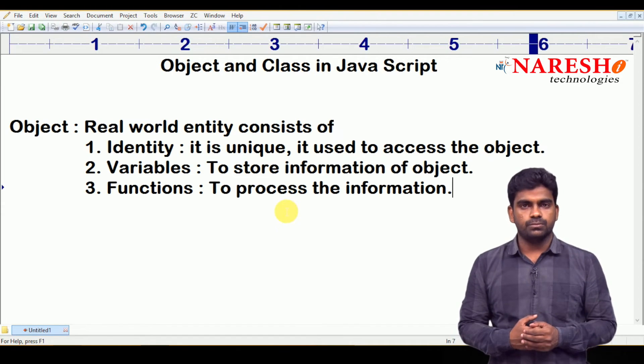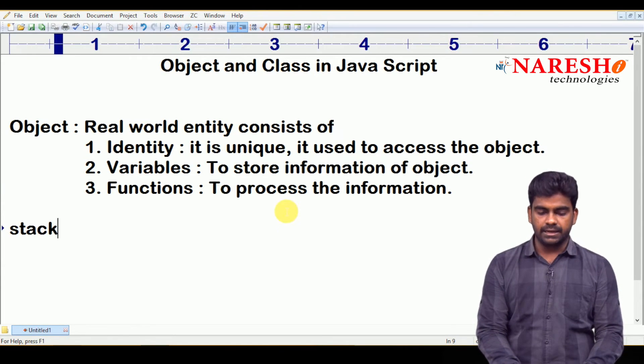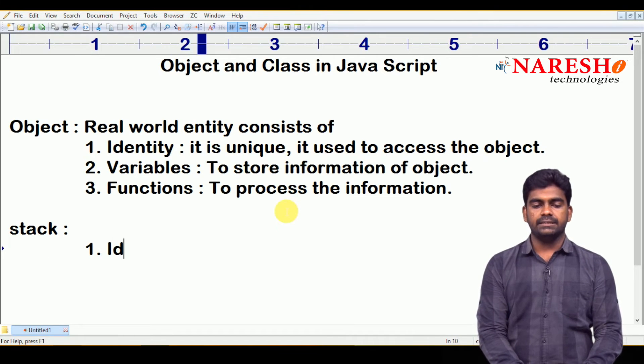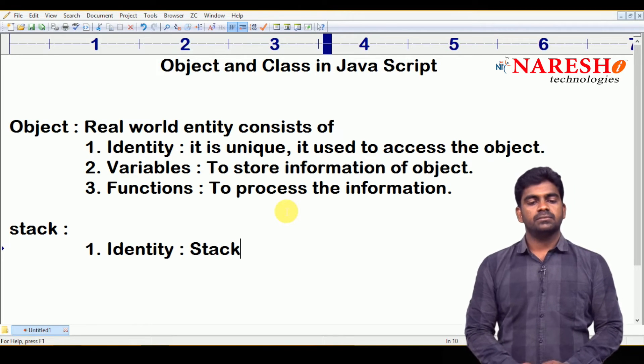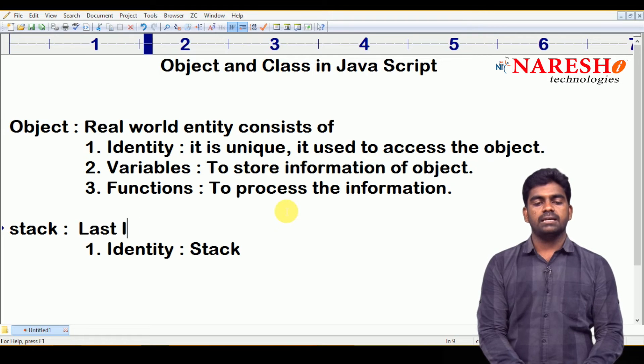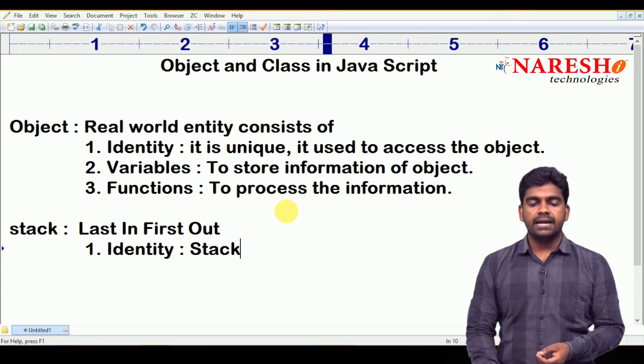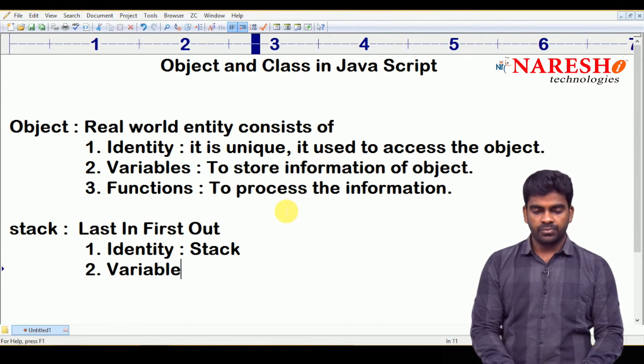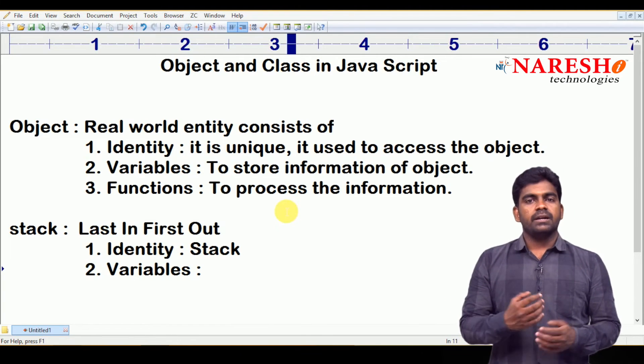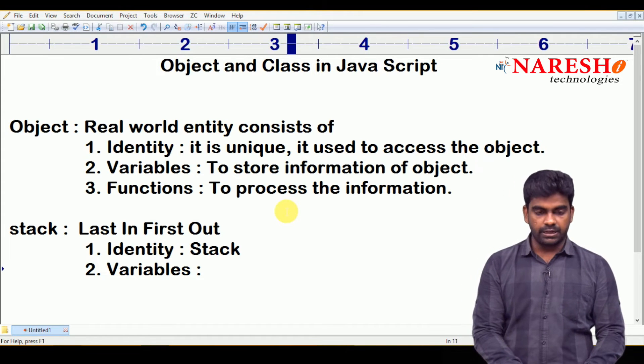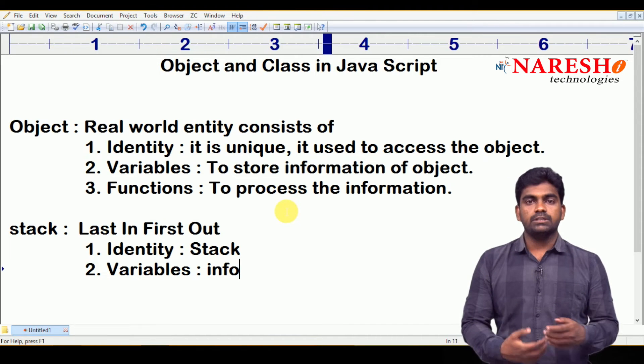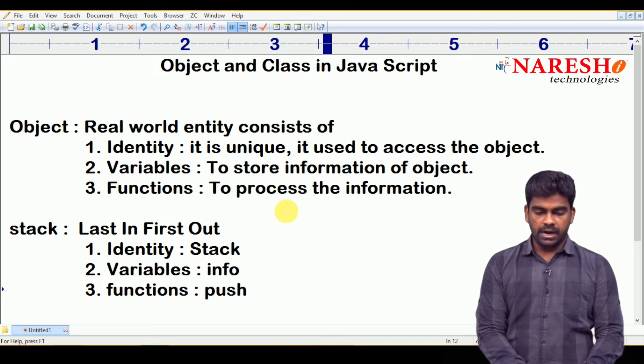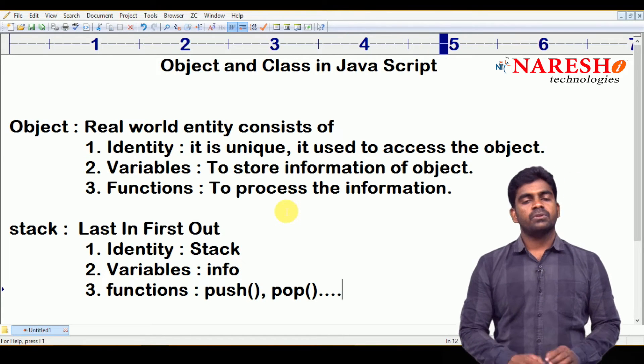In our data structures also, if you take one object called a stack, it is like a data structure. It has an identity, and of course we can give any identity like stack only. And simply here it is an object. We can say that it follows the rule called last in first out. Identity is called stack. With the help of stack object only, we can access the complete functionality. And second one is a set of variables. What are the variables we are using to perform the operations? That comes under information inside that stack, which is nothing but variables. We are storing the data. And next, how to process the data? Through functions only we can process the data. Functions like if you want to push element, if you want to pop the element, if you want to display elements - all these things come under functions.